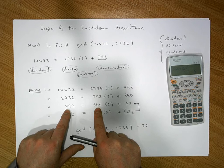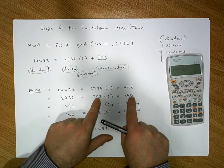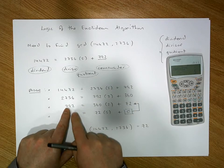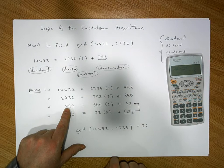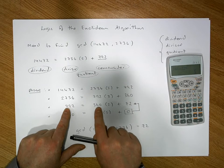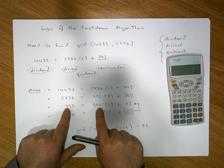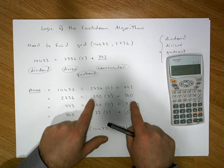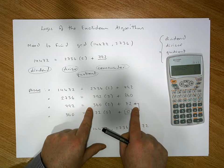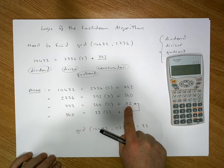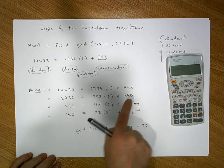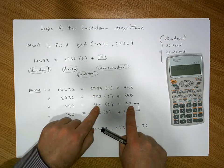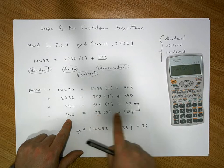We know 72 divides into 792, and 792 is equal to this summation here. We know 72 divides into 360, so if it divides into the 360 and into the summation, it must divide into the remainder. Clearly 72 divides into 72. Continuing on, 72 divides into both of them with a remainder of zero.